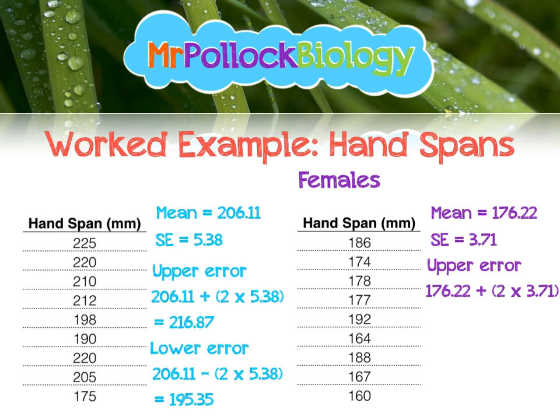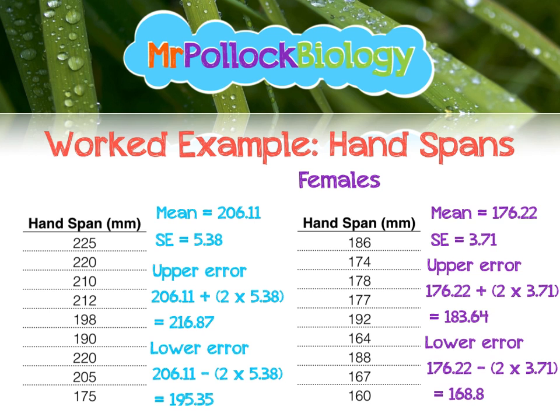For females, the upper error bar is the mean (176.22) plus two lots of standard error, giving us 186.64. The lower error bar is 176.22 minus two lots of standard error, which is 168.80.